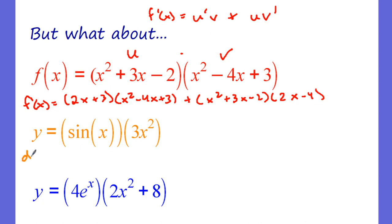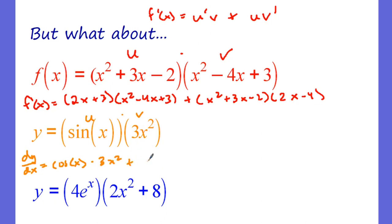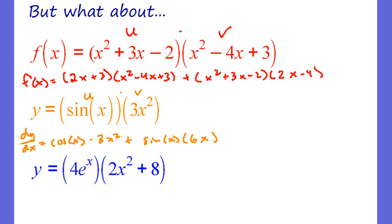For dy over dx, we call sine of x our u and 3x squared our v. The derivative of sine of x is cosine of x, times v, which is 3x squared. Then we keep u the same — sine of x — and do v's derivative using the power rule: 6x. That is the derivative using the product rule.